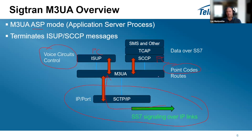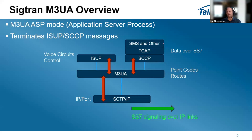If SCCP TCAP messages come in, we can add additional applications. These are always data over SS7, not voice — either SMS signaling or other types of applications over an SS7 network.